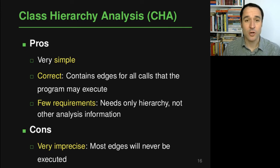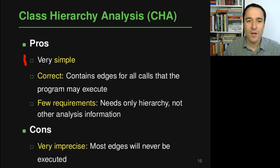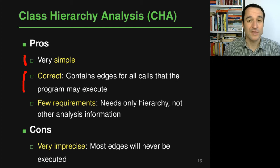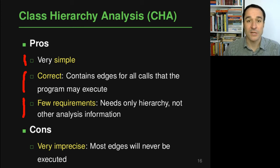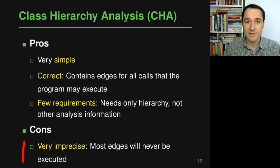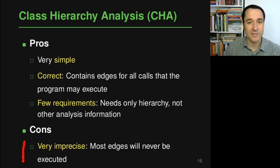Summarizing the pros and cons of class hierarchy analysis: on the pro side, it's a very simple approach that can be explained in a minute or two. It's correct in the sense that all edges that may happen while the program is executing are actually in the call graph, so it's not missing anything. It has very few requirements — all you need is a class hierarchy, which is relatively easy to get for most languages, and no other analysis information. The obvious disadvantage is that it's a very imprecise analysis — there will be many edges in the call graph that will never get executed, but because the analysis just doesn't know, it includes them to remain correct.